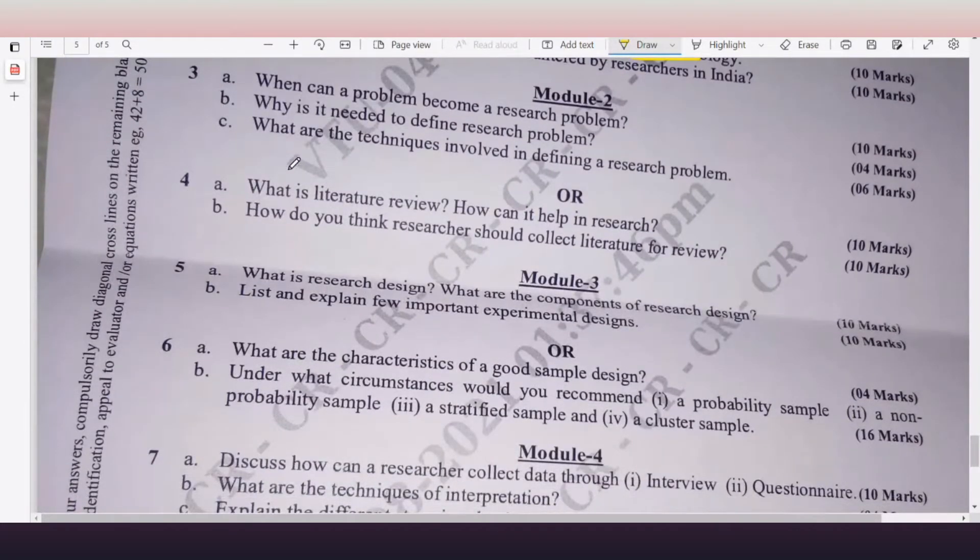So under Module 2, the second question, this is 3abc. After that, 4ab: What is literature review? How can it help in research? 10 marks. 4b: How do you think researchers should collect literature for review? 10 marks.